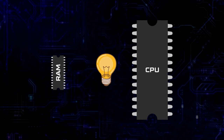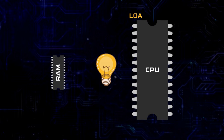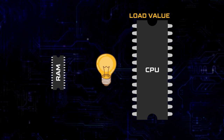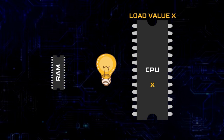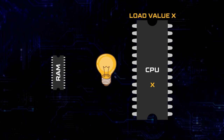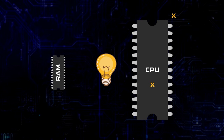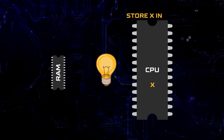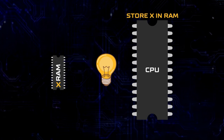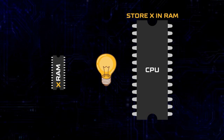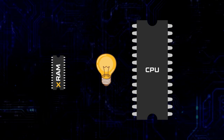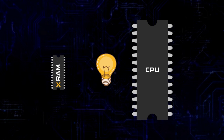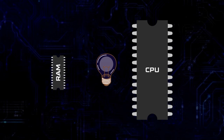Another important part of a computer system while powered on is Random Access Memory, or RAM. RAM is temporary storage which can be written to by the CPU while the computer is powered on. When power is lost, all data in RAM is lost.